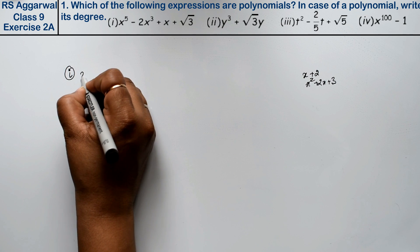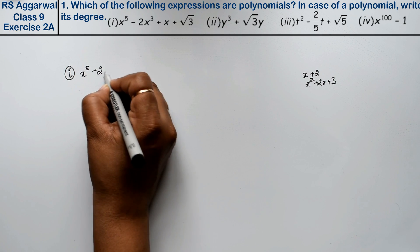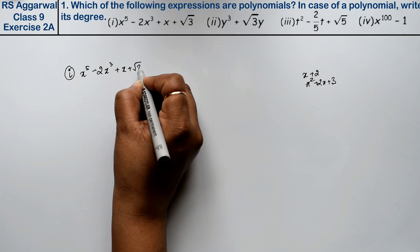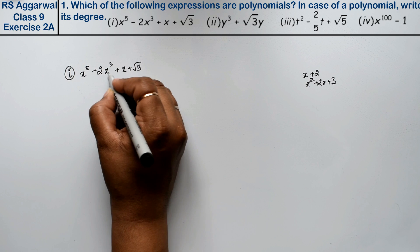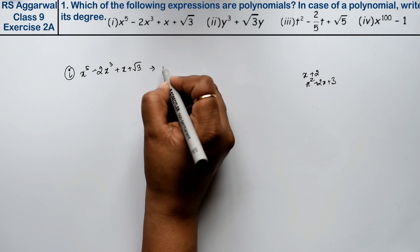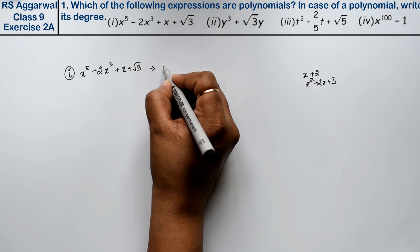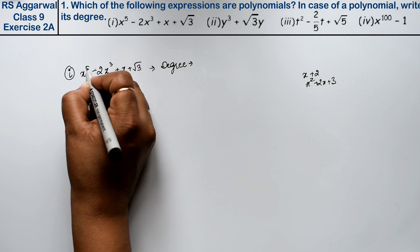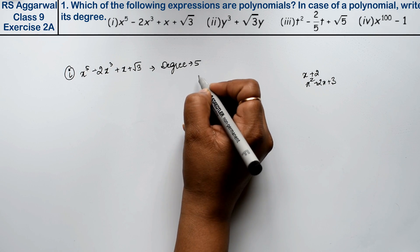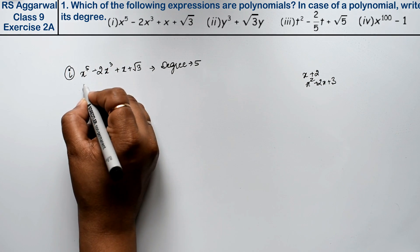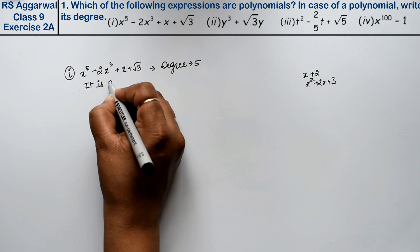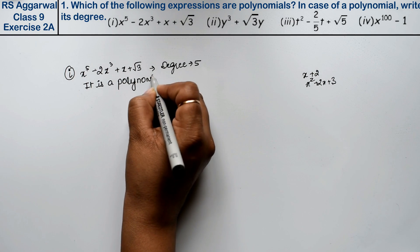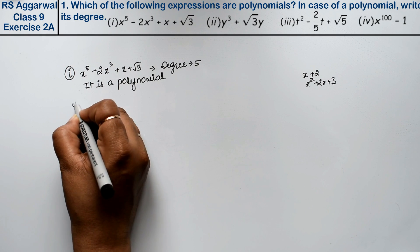First part is x⁵ minus 2x³ plus x plus root 3. Its highest power is 5, which is a whole number, so this is a polynomial and its degree — the highest degree — is 5.